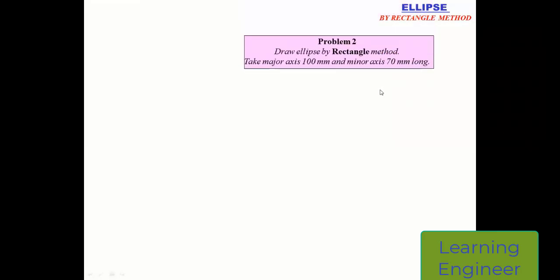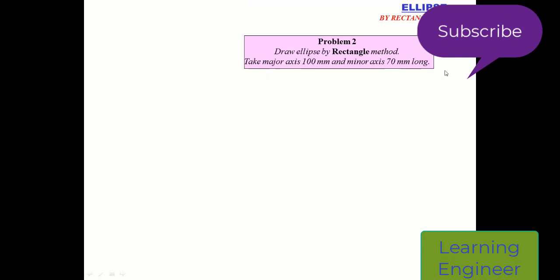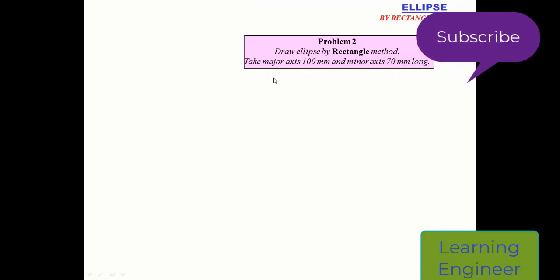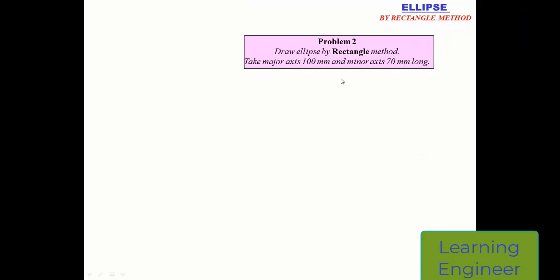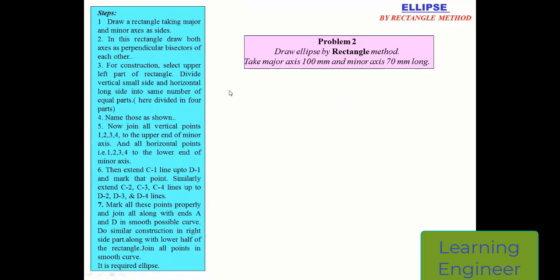In this video we will see how to draw the ellipse by using the rectangle method. Let us take an example to understand this. The question is to draw the ellipse by rectangle method where the major axis length is 100 millimeter and minor axis length is 70 millimeter.